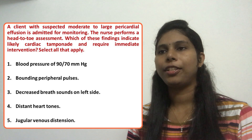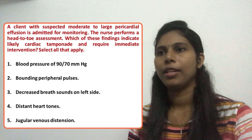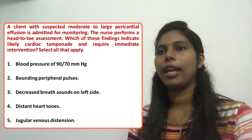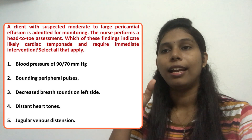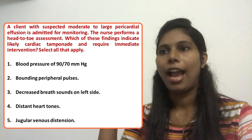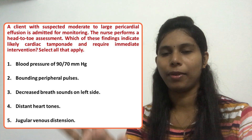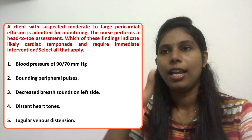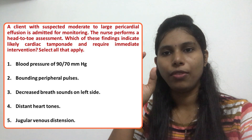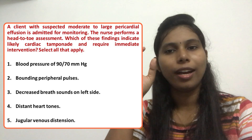A client with suspected moderate to large pericardial effusion is admitted for monitoring. When the nurse performs a head-to-toe assessment, which of these findings indicate likely cardiac tamponade and require immediate intervention? Select all that apply. This is a select-all-that-apply question, and they are essentially asking what are the signs and symptoms of cardiac tamponade.